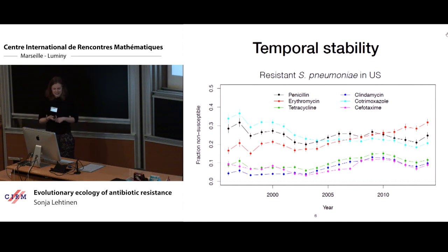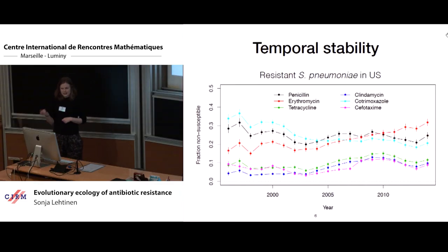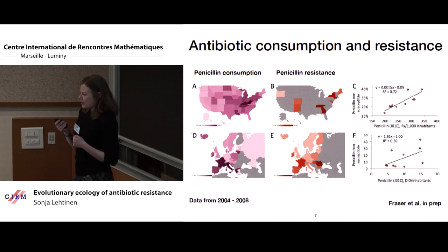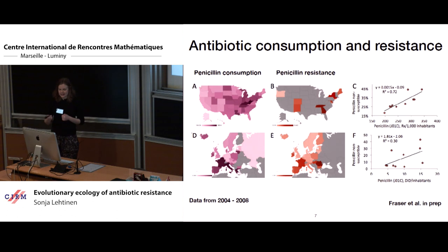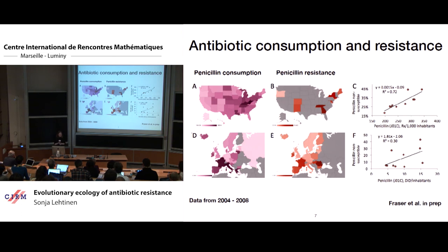This is not really what we see in the data. This is data from the pneumococcus in the United States showing resistance levels against various antibiotics over the past few decades — you can see this long-term intermediate frequency of antibiotic resistance. Similar trends are also seen in other bacteria and at other locations. Similarly, looking at the relationship between antibiotic consumption and resistance, we don't see this threshold-like behaviour but rather a relatively linear relationship between antibiotic consumption and resistance. These are examples from Streptococcus pneumoniae from the United States and from Europe, and similar trends are also observed in other bugs.